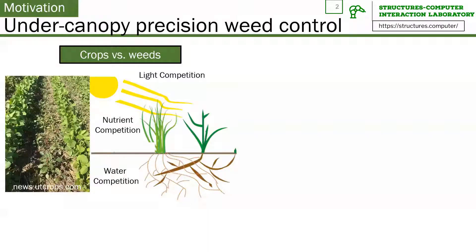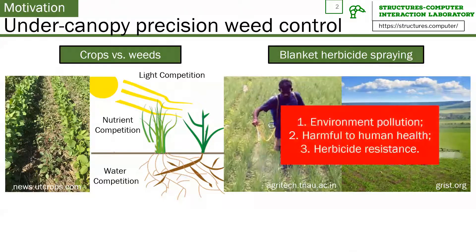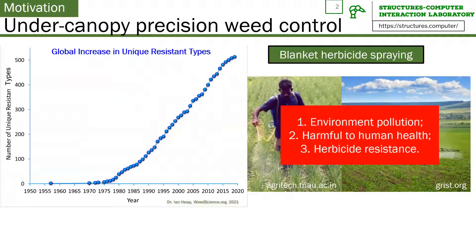In agriculture, weeds are the biggest headache of farmers as they compete with crops for resources and reduce crop yield. To kill the weeds, farmers spray the entire field with herbicides. However, the overuse of herbicides causes environmental pollution and is harmful to human health. Also, types of weeds showing herbicide resistance increase exponentially.